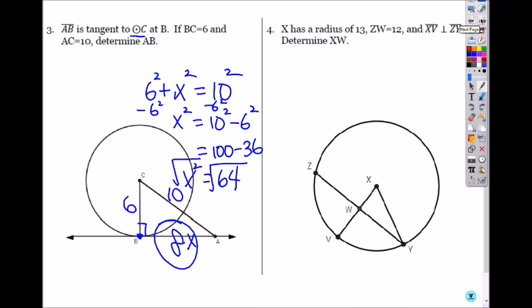Number four. X has a radius of 13. What's the radius? This is 13. Do you see any other radius on the circle? You see this? That's also 13. And ZW is 12. And XV is perpendicular to ZY. These two are perpendicular. So again, you see how the cord is perpendicular to the radius? That means, if this is 12, what is this equal to? 12. That's the radius cord theorem.